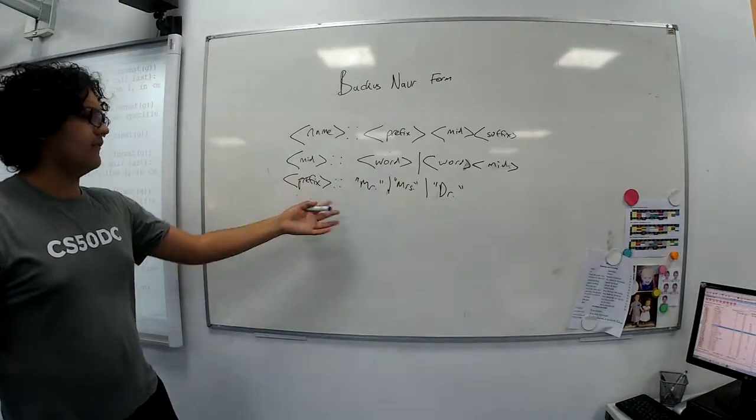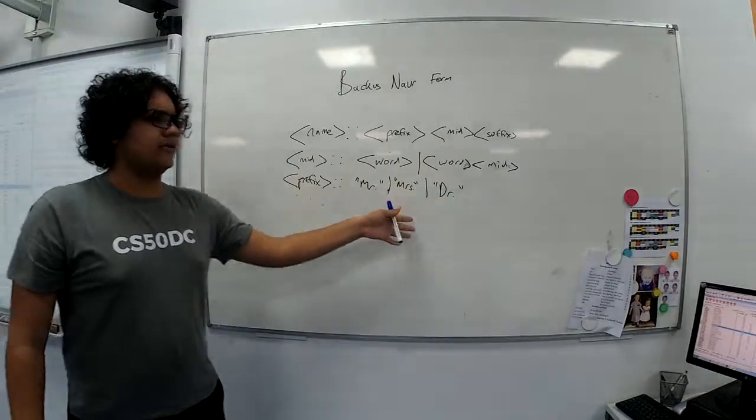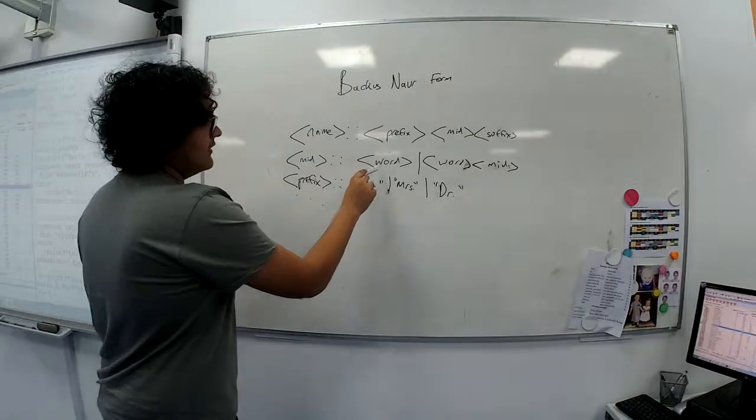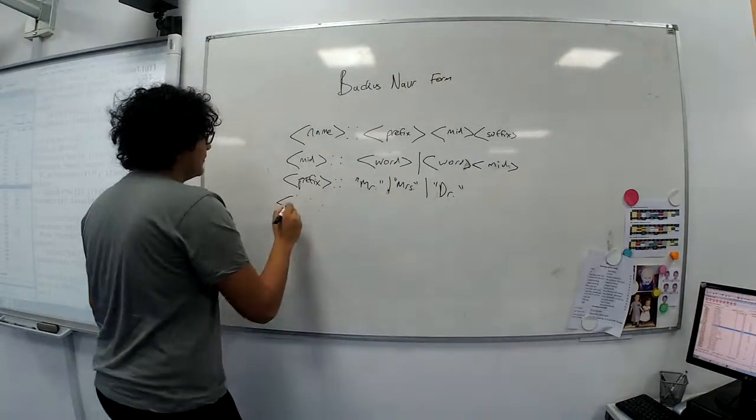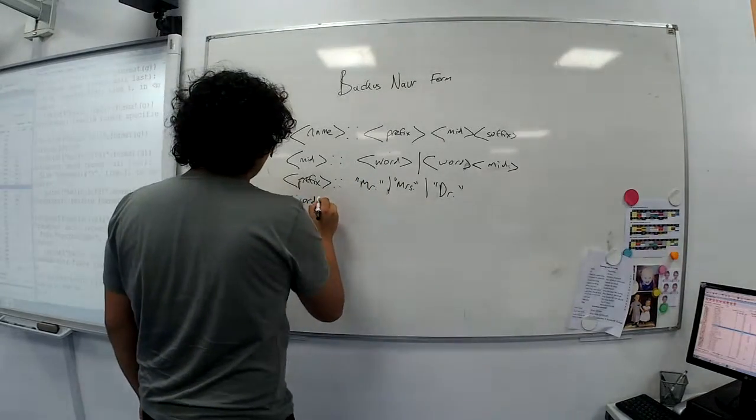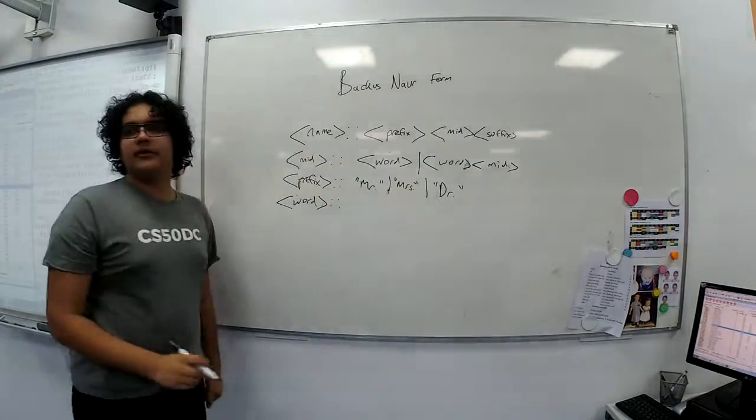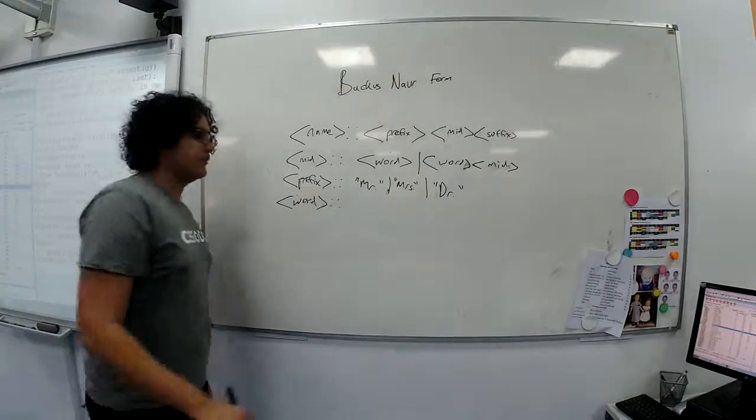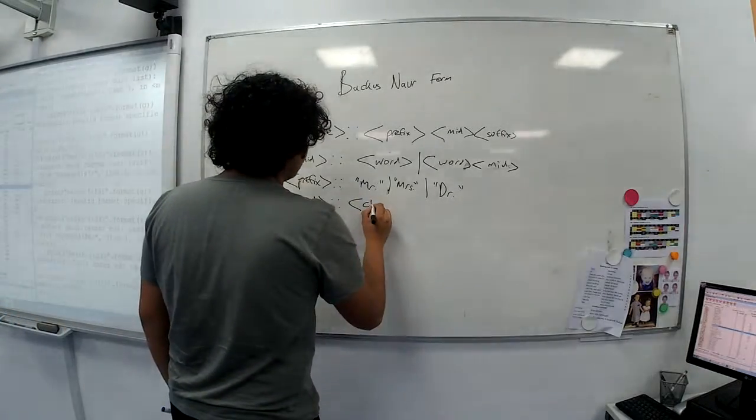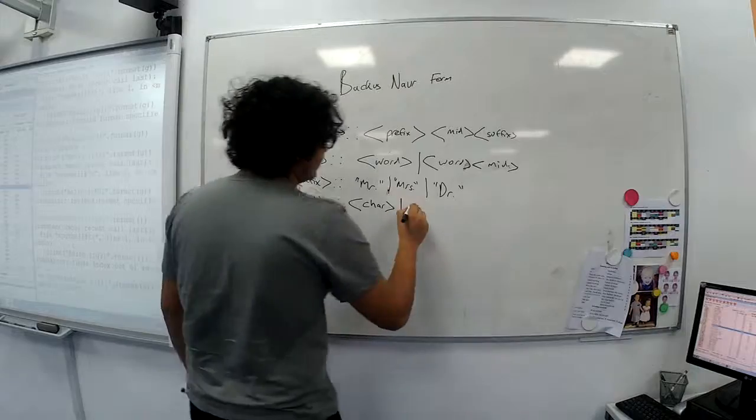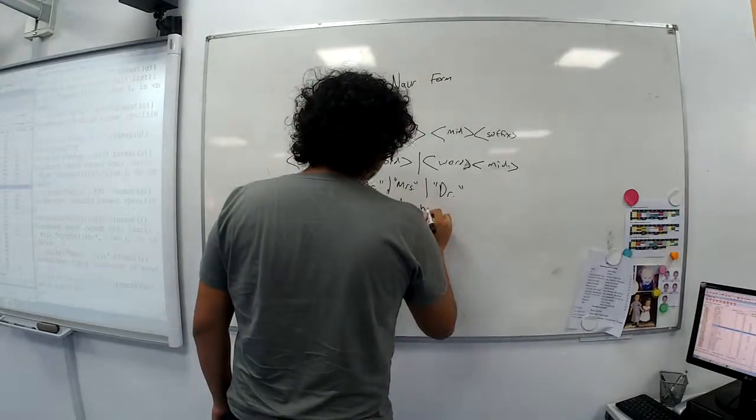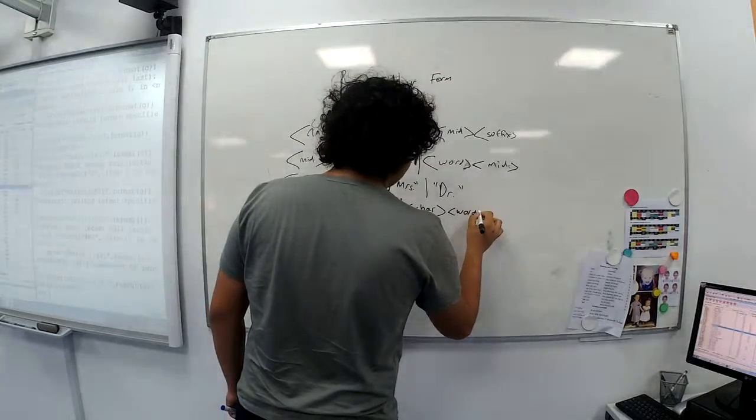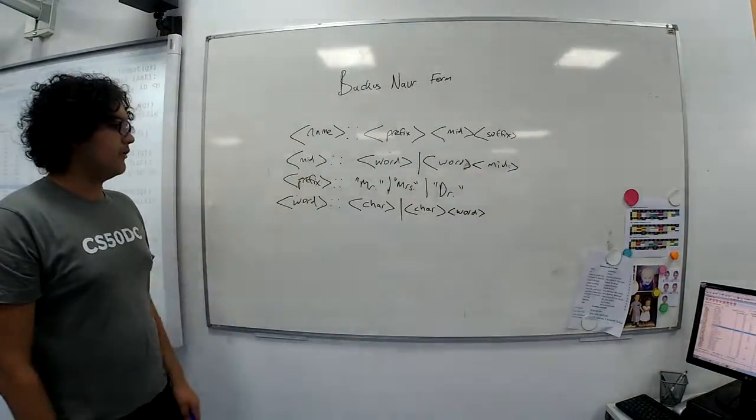For suffix, we can do the same. We could define like Esquire, or Senior, or Junior. And then the only thing left to define is word. So now word, we can also define recursively. So a word is a string of characters, or actually more specifically alphabetical characters. So it could be either a single character, or defining it recursively, it could be a character followed by another word.